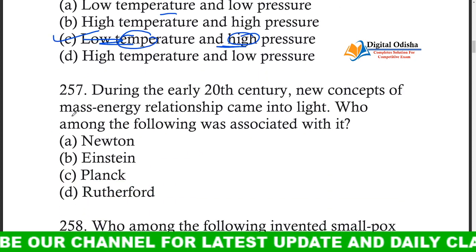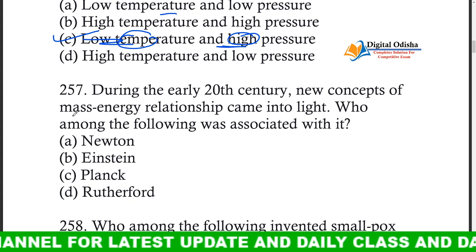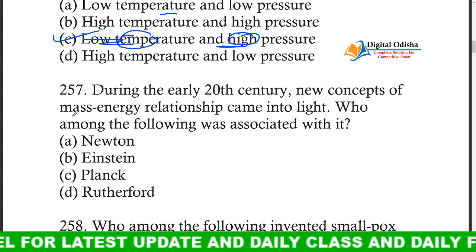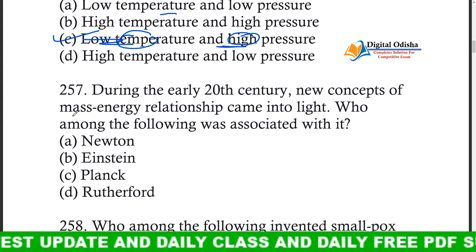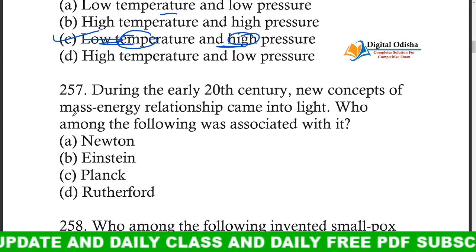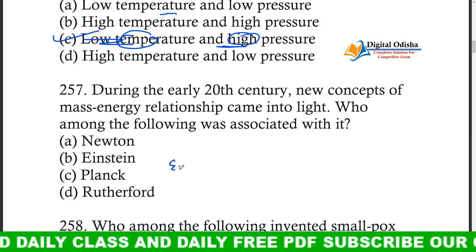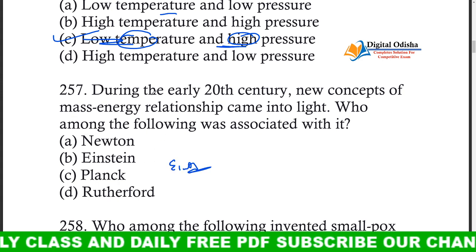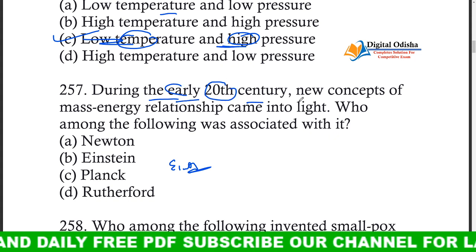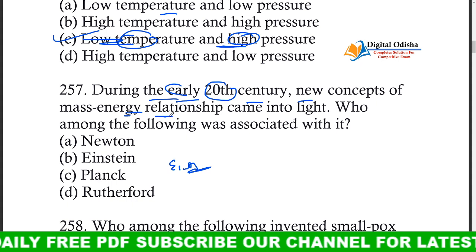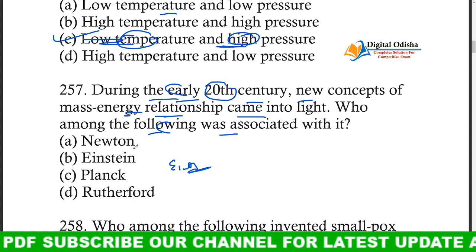During the early 20th century, a new concept of mass-energy relationship came into light. Who among the following was associated with it? Options: Newton, Einstein, Planck, Rutherford. The answer is obviously Einstein. The mass-energy relationship is associated with Einstein.